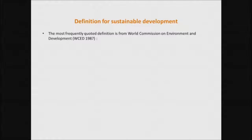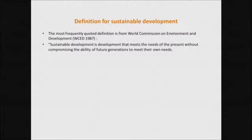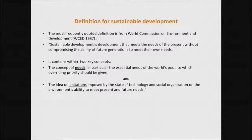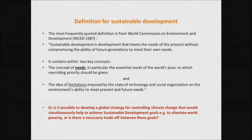The most quoted definition of sustainable development is by the World Commission on Environment and Development in 1987: sustainable development is development that meets the needs of the present without compromising the ability of future generations to meet their own needs. It has two key concepts: the concept of needs — in particular the essential needs of the world's poor — and the idea of limitations imposed by technology, social organization, and the environment. The key question is: can we develop a global strategy for controlling climate change that simultaneously achieves sustainable development goals, such as alleviating world poverty, or is there a necessary trade-off?